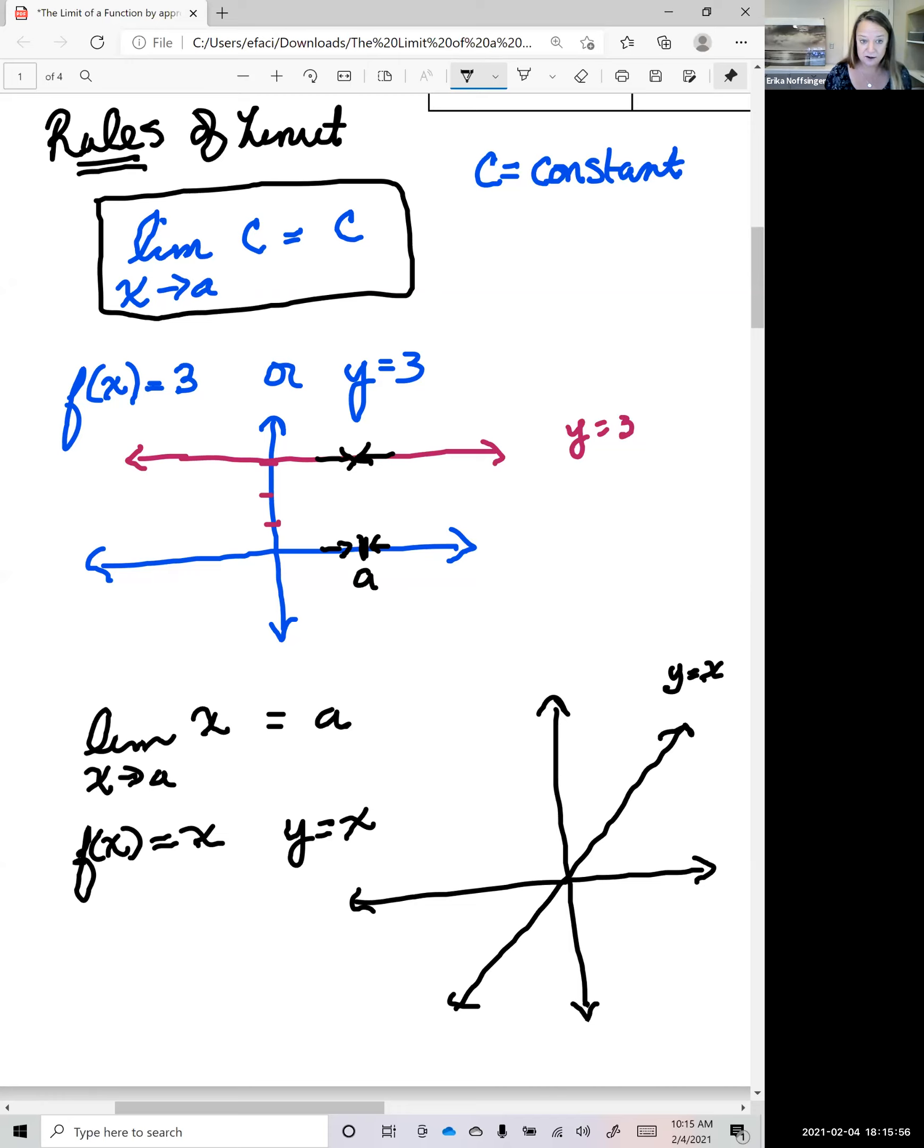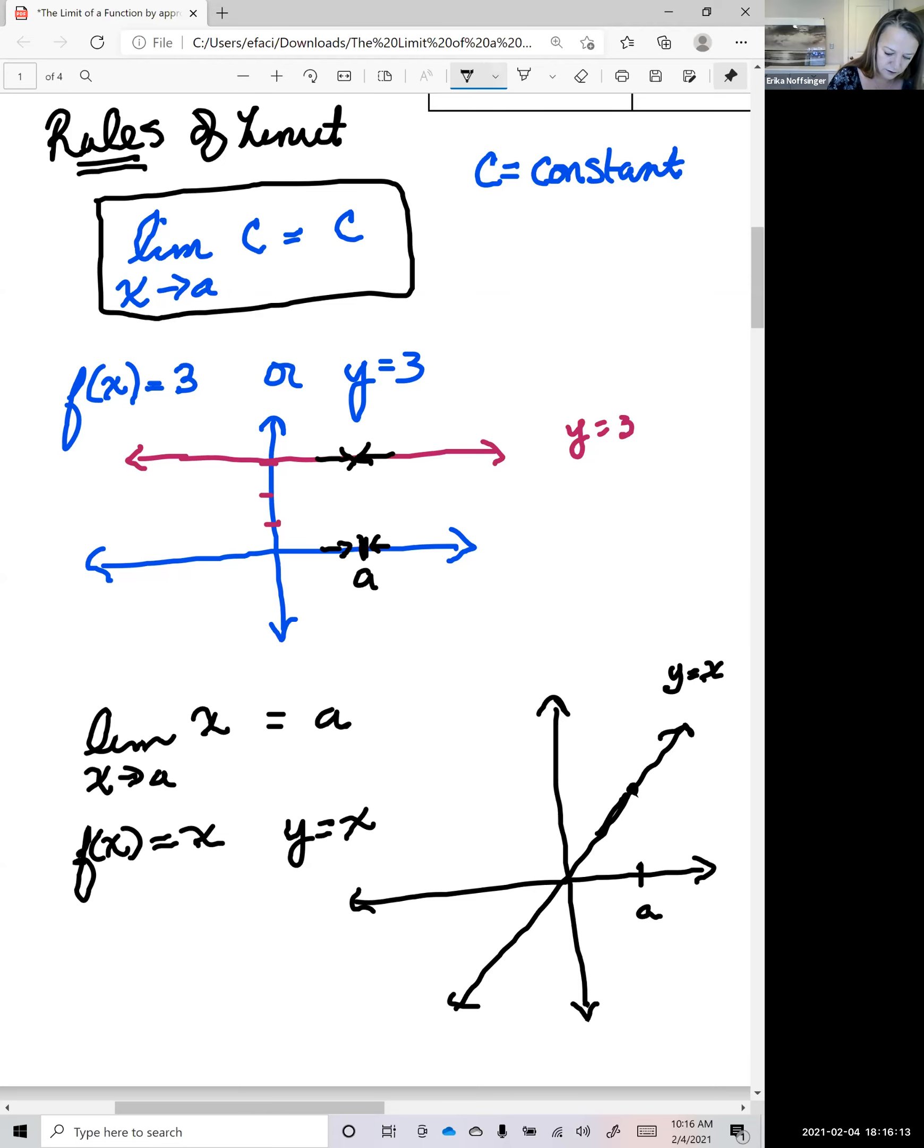And so if I choose any place on this X axis where, so let's say A is here, and we went up and we were trying to figure out what is happening to the Y value as we're getting closer and closer to X equals A. Following the graph on the left and the right of X equals A, the Y value that we're getting closer and closer to is also A. And so here's another rule of limits that is going to help us.